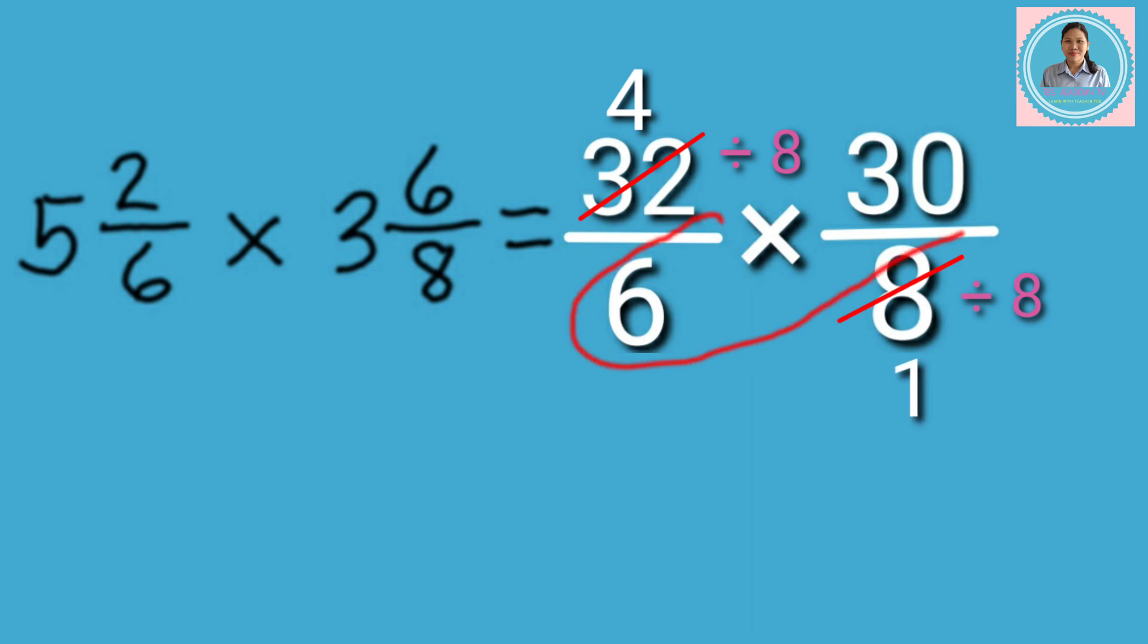Next, get the GCF of 6 and 30 and then divide them. The GCF of 6 and 30 is 6. Next, let's cancel them and then divide. 6 divided by 6 equals 1. 30 divided by 6 equals 5.